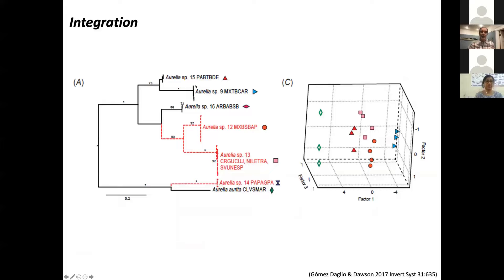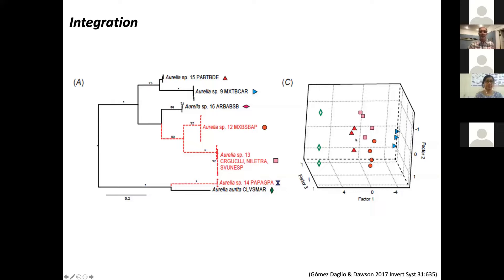We were also able to integrate that with morphological data. With a phylogenetic tree alongside morphological similarity, we can see that some taxa that are evolutionarily different are also morphologically different — but this is not always the case. Some taxa that are evolutionarily distant are morphologically close, suggesting convergence, while others may be plesiomorphic. This gives insight into what is happening with morphology and may indicate natural selection, providing a richer understanding of diversity while also generating new questions.